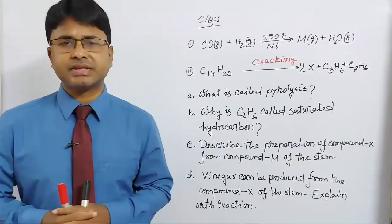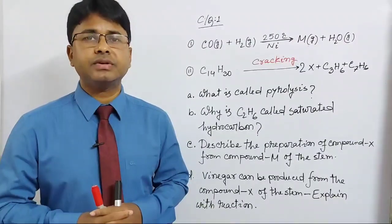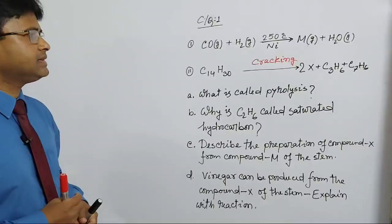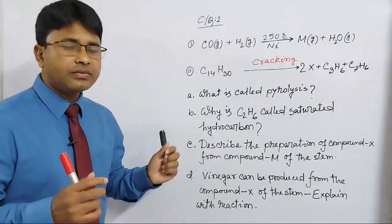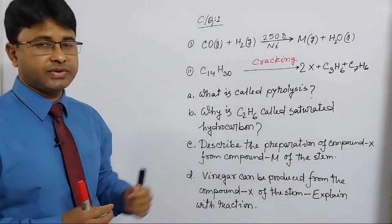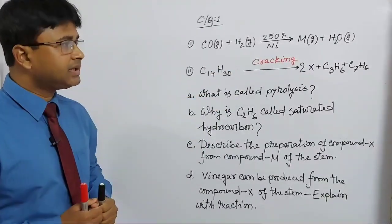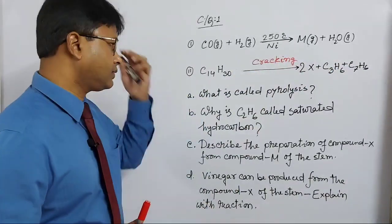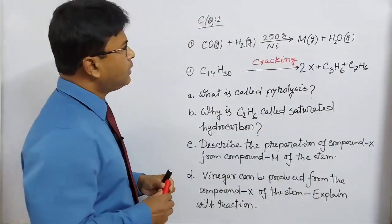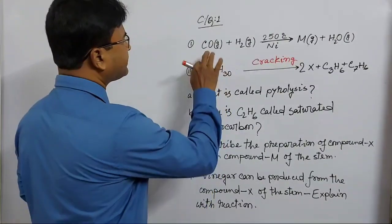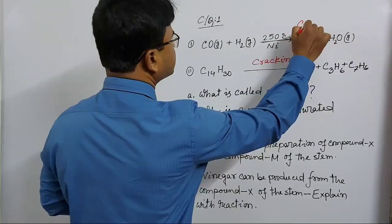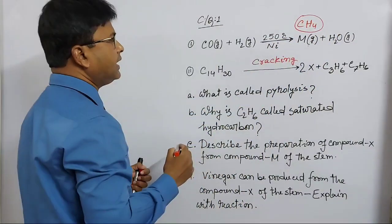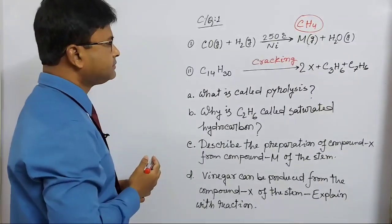Today, I am going to discuss about the creative part of chapter 11. Look at the whiteboard. Carbon monoxide is heated at 250 degree centigrade with hydrogen gas in the presence of nickel catalyst to produce M gas and water vapor. We know that if carbon monoxide is heated with hydrogen, methane gas is produced. So, M represents methane.